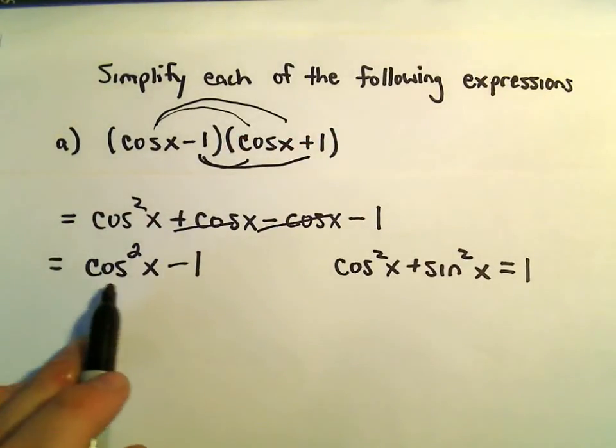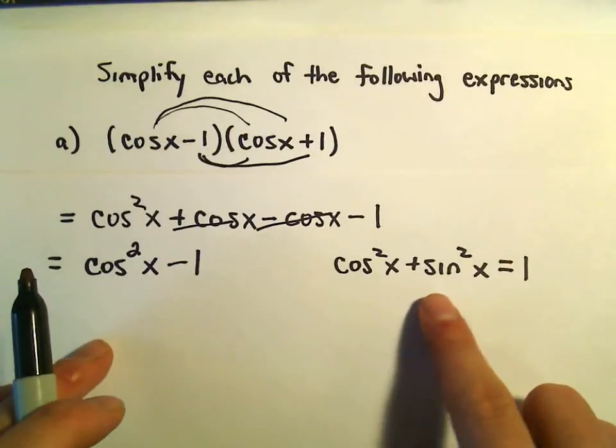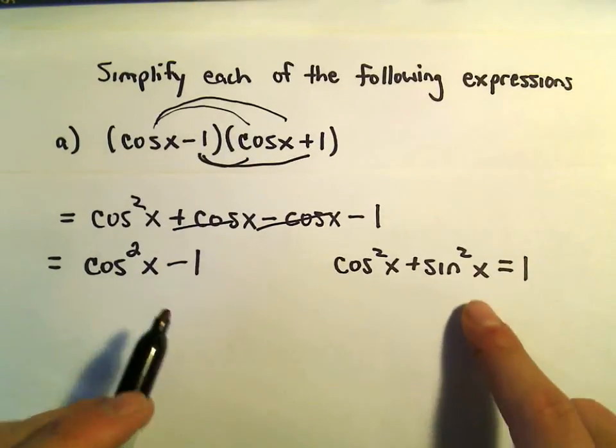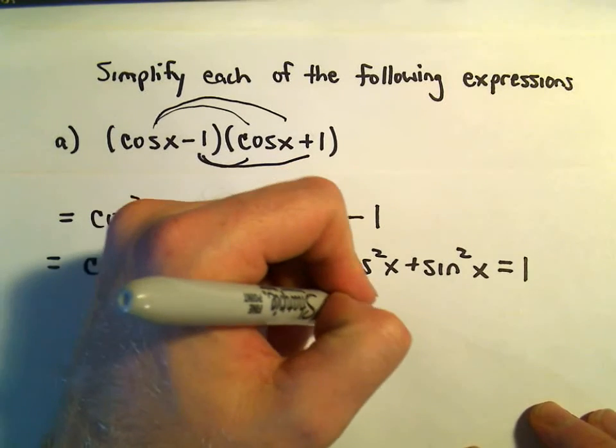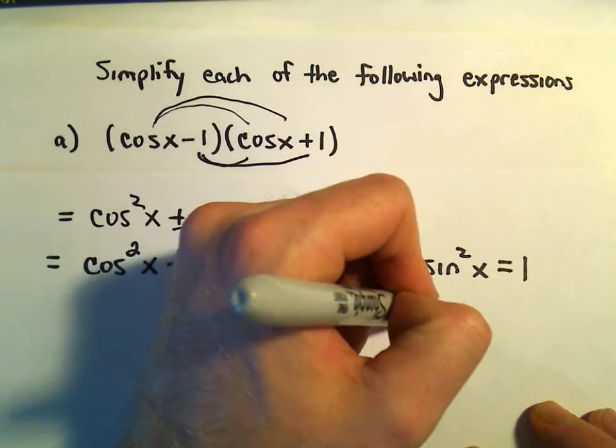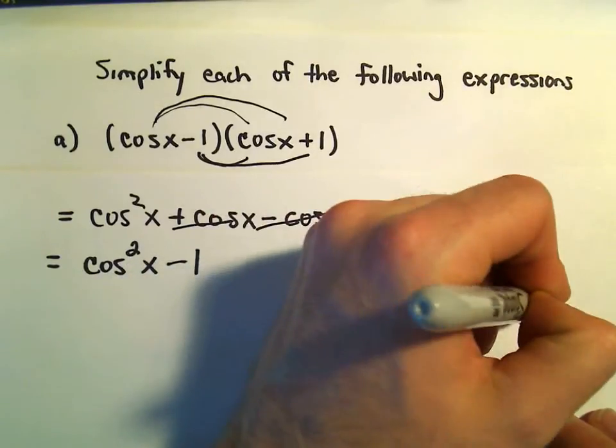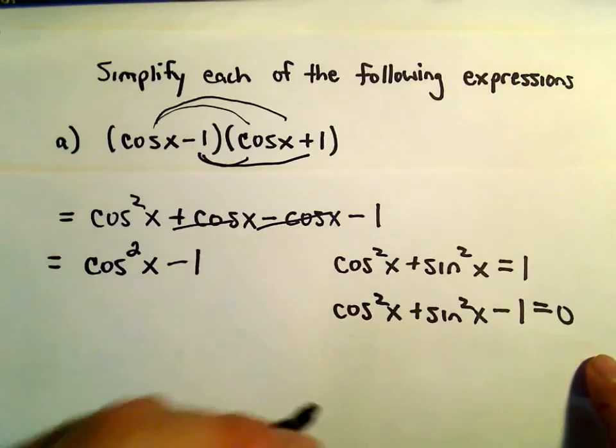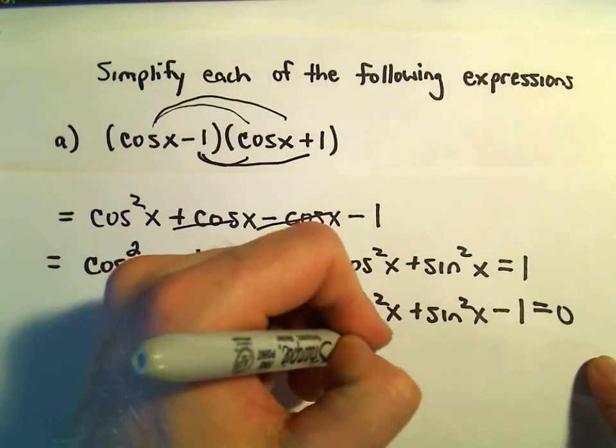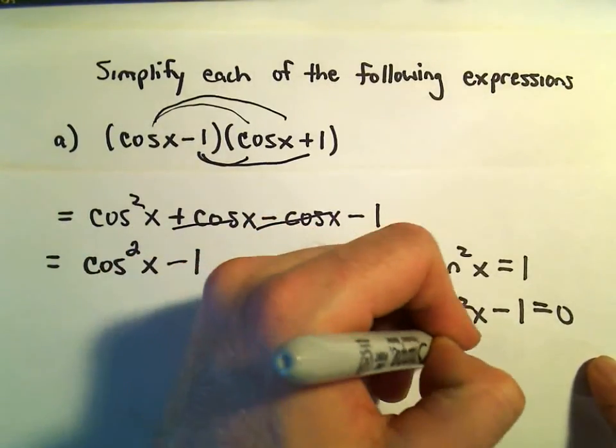We can manipulate this identity. If we subtract 1 from both sides, we get cosine squared x plus sine squared x minus 1 equals 0. Then we could subtract sine squared from both sides and get cosine squared x minus 1 equals negative sine squared x.